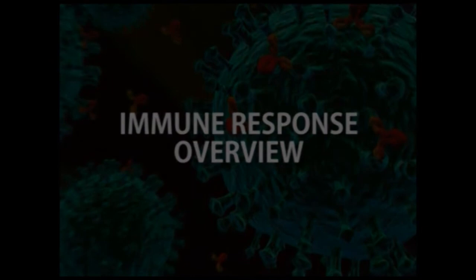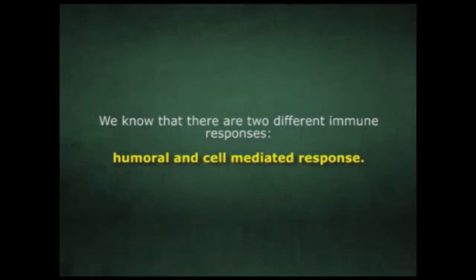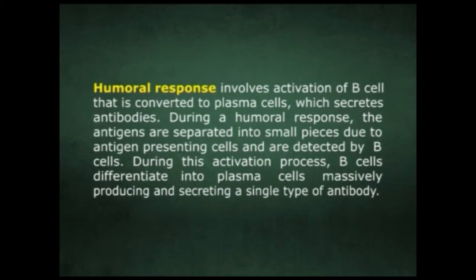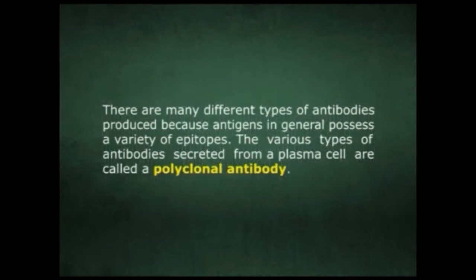Coming to the immune response overview, there are two different immune responses: humoral and cell-mediated response. The humoral response involves the activation of B cells that are converted to plasma cells which secrete antibodies. During a humoral response, antigens are separated into small pieces by antigen-presenting cells and are detected by B cells. During this activation process, B cells differentiate into plasma cells, massively producing and secreting a single type of antibody.